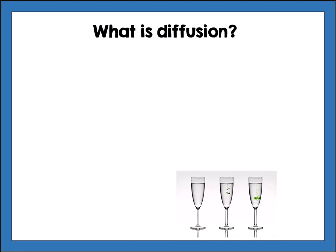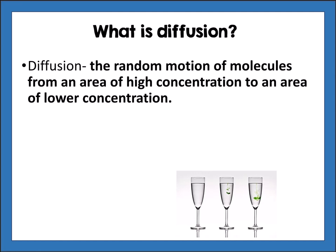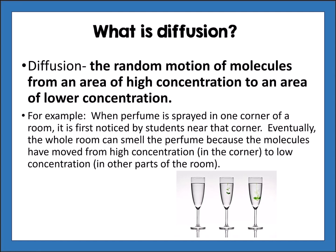Diffusion is a passive transport example, meaning it does not require energy. Diffusion is the random motion of molecules from an area of high concentration to an area of lower concentration. When perfume is sprayed in one corner of a room, it is first noticed by students near that corner, but eventually the whole room can smell it because the molecules move from high concentration to low concentration elsewhere.